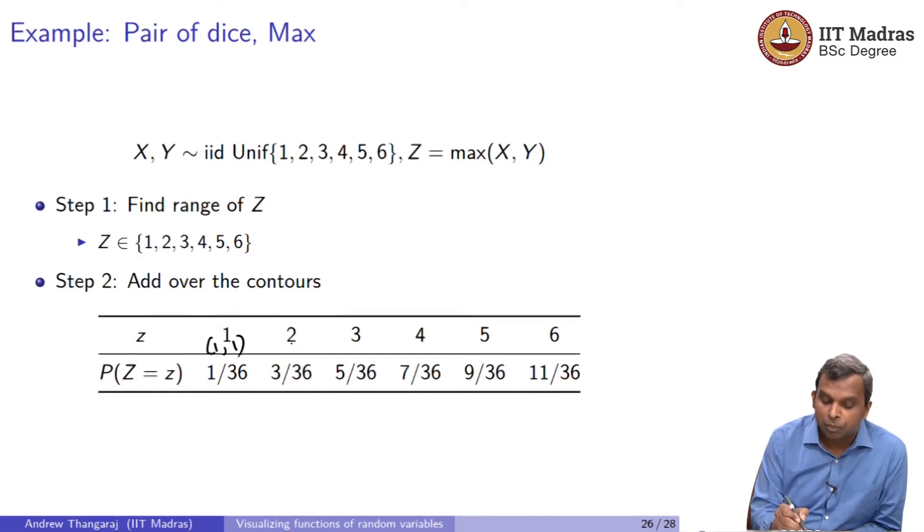What about max being 2? If the max has to be 2, one of the two throws has to be 2. Supposing the first throw is 2, the second throw can be 1 or the second throw can be 2. Both will give you max 2, and then I've missed out one possibility here. The first throw can be 1 and the second throw can be 2. How did I get that? Think about how I got that.